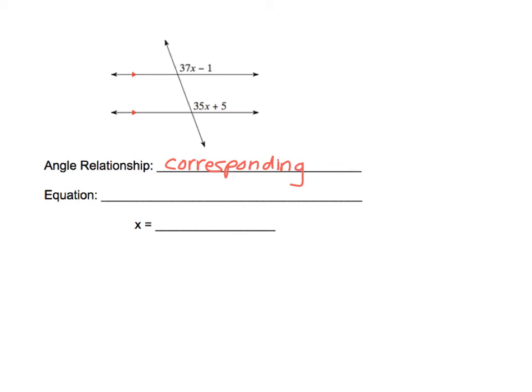And corresponding angles are also congruent. So your equation, you're going to take the two expressions, 37x minus 1, and you're going to set it equal to 35x plus 5. Then we're ready to go ahead and solve our equation.